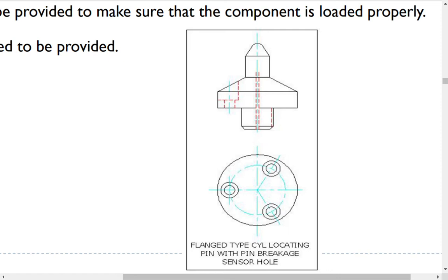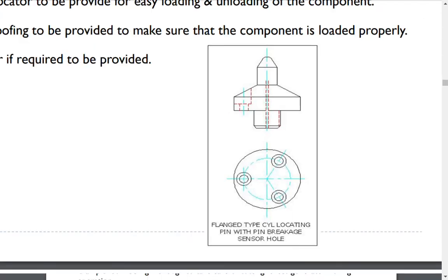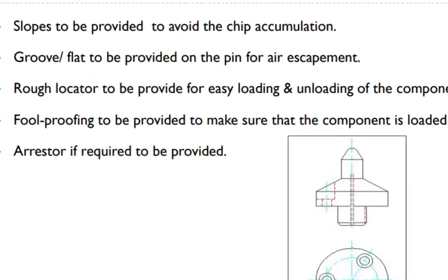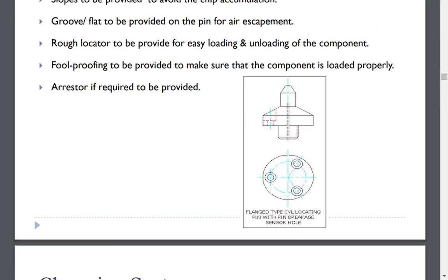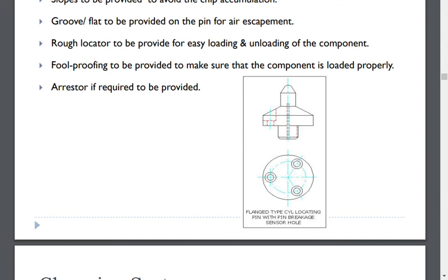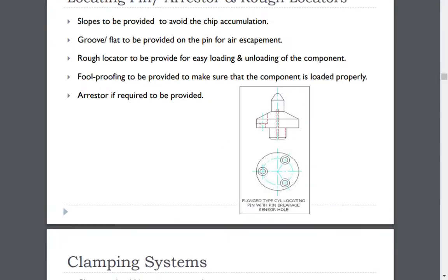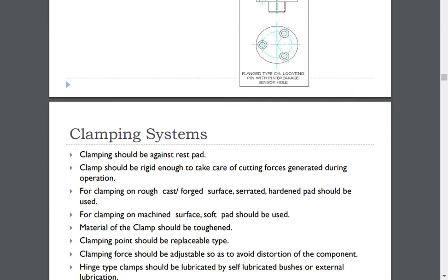Pin breakage detection by air sensing can be provided. For higher accuracies hydraulic operated, collar type, locating pins to be provided. Slopes to be provided to avoid the chip accumulation. As shown in figure it is an example of ideal pin design. Groove or flat to be provided on the pin for air escapement. Rough locator to be provided for easy loading and unloading of the component. Fool proofing to be provided to make sure that the component is loaded properly. Arrestor if required to be provided.